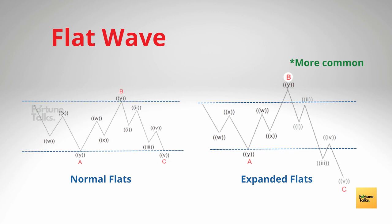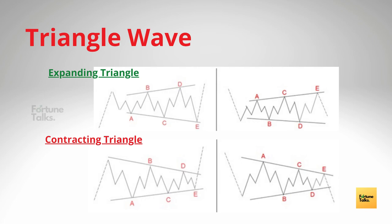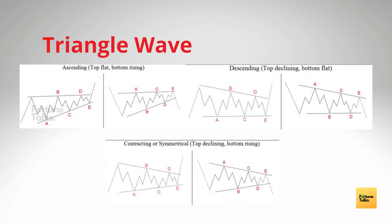The final type of corrective wave is the triangle wave. The triangle wave is a pattern consisting of five sub-waves in the form of a 3-3-3-3-3 structure, labeled as A, B, C, D, E. The triangle wave can be either expanding, in which the following sub-waves get bigger, or contracting type, which is in the form of a wedge. Triangles can be categorized as symmetrical, descending, or ascending, based on whether they're pointing sideways, up with a flat top, or down with a flat bottom. Theoretically, it's easy to spot a triangle pattern, but it generally takes a lot of practice for identifying them in the market.